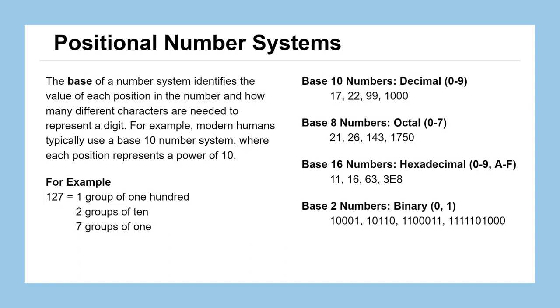So when we talk about positional number systems, what we're really talking about is the base of the number. When we talk about the base, the base is a number that identifies the value of each position in the number, and how many different characters or numerals are needed to represent a digit. So for example, us modern humans, we typically use a base 10 number system, perhaps because we have 10 fingers or we have 10 toes, and each numeral in that number represents some count of how many powers of a certain power of 10 there are.